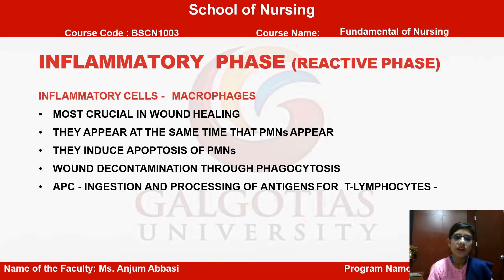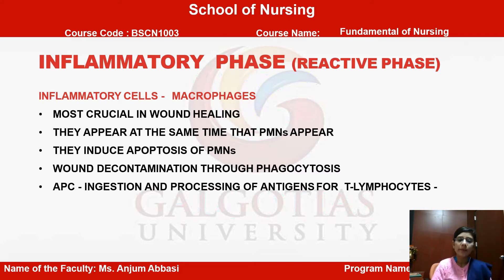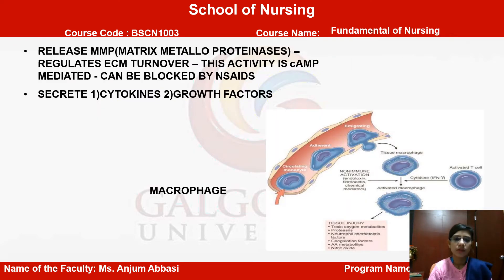Next, you will see inflammatory cells — macrophages. They are most crucial in wound healing. They appear at the same time that PMNs appear and induce apoptosis of PMNs. Wound decontamination occurs through phagocytosis, ingestion and processing of antigen, and lymphocytosis.